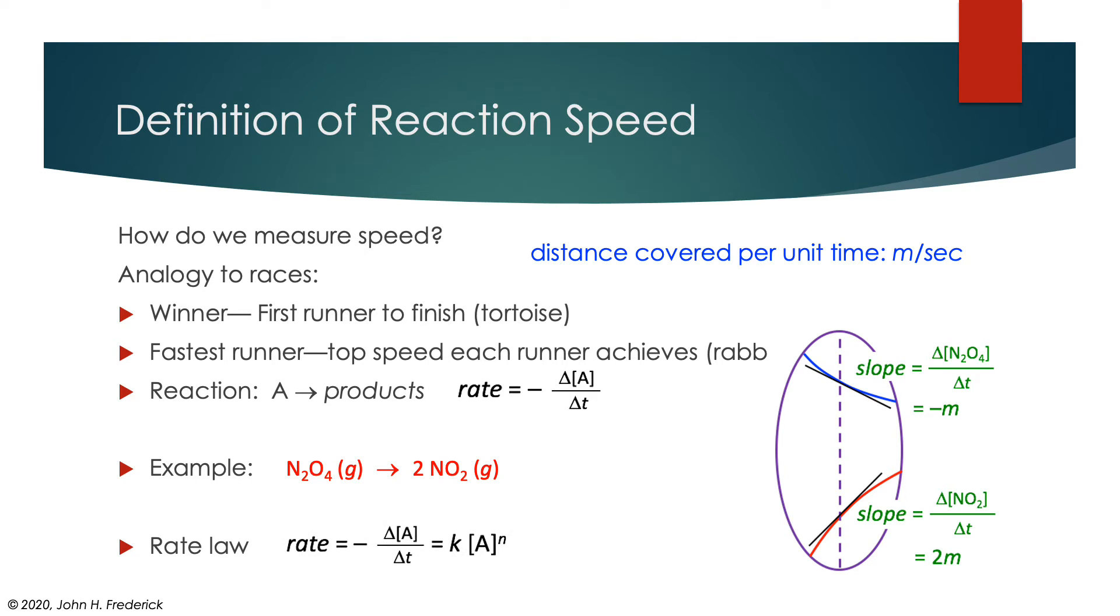Now why did I write the rate law like this? It's the slope of those lines, and in particular the slope of the disappearance of the reactant. So that's why I put the negative sign in front there. And I've written it as proportional to some power of the concentration.